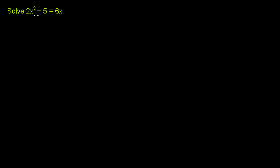We're asked to solve 2x squared plus 5 is equal to 6x. We have a quadratic equation here. To put it into a form we're more familiar with, let's put it into standard form, which is ax squared plus bx plus c is equal to 0.